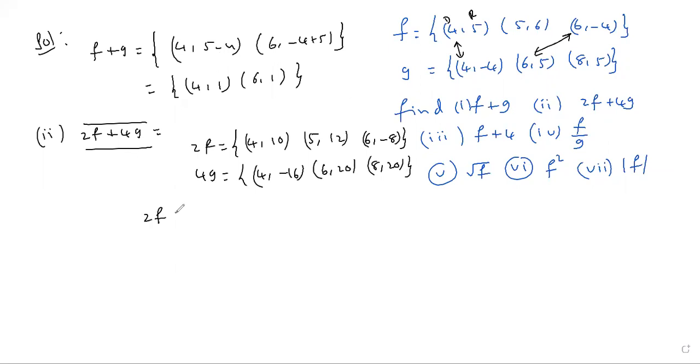Right, 2f plus 4. Domain as it is 4. Then plus operation. Range again same domain element, either 5 or 6. 6 comma -8 plus 20.